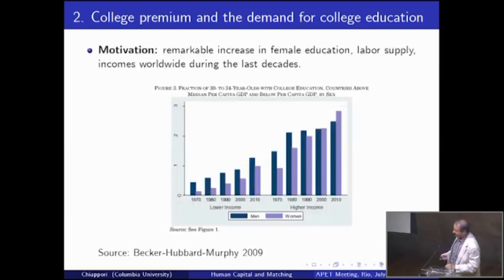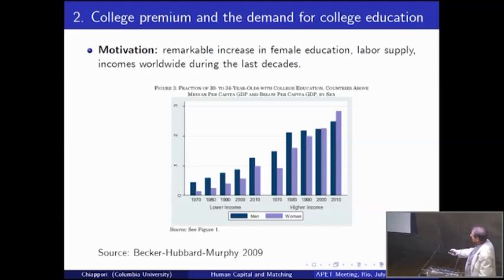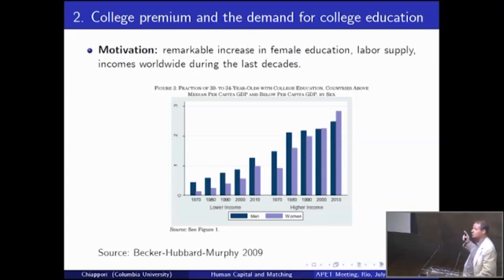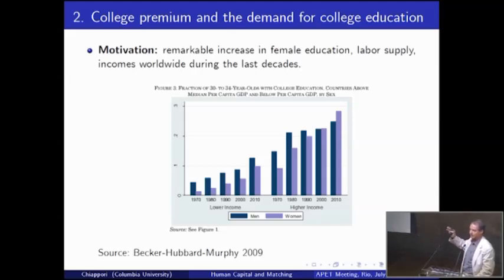Here is the second fact. Let me start with a graph. It's in the paper by Gary Becker, Kevin Murphy, and Hubbard. On the right-hand side you have rich countries, on the left-hand side poor countries — rich and poor defined simply as GDP per capita above or below the median. The size of the bar shows the percentage of the population with a college degree. Dark blue is men, light blue is women. The graph speaks by itself: in developed countries, women are now more educated than men.